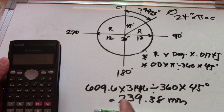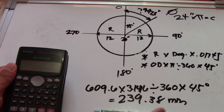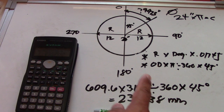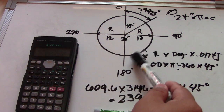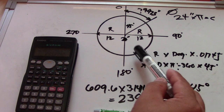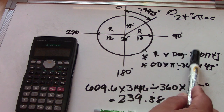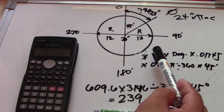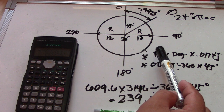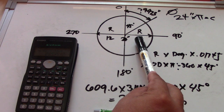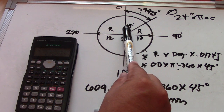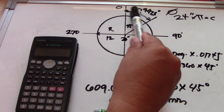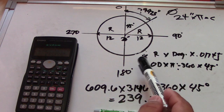Both formulas give 239.3 mm. Please take note of Formula 1: radius times degrees times 0.01745 to find the arc length. With radius = 12 and degrees = 45, the arc length is 9.423 inches.